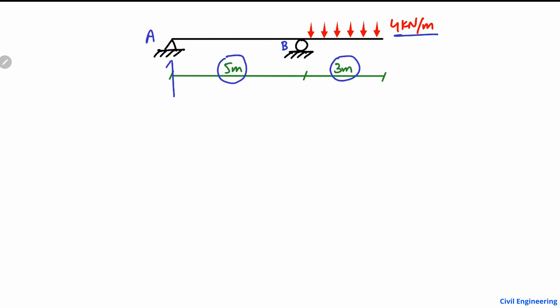Support A is a hinge support that can take both vertical and horizontal reactions — RA acting upward. Support B is a roller support with reaction RB also assumed to act upward, to resist the vertical load of 4 kN/m on the beam. There is no horizontal load on the beam, so the horizontal component of RA equals zero. The roller support can only provide one vertical reaction, RB.